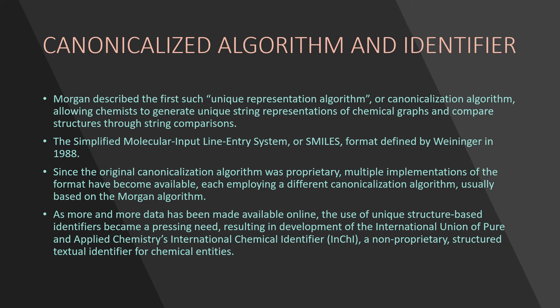There are many databases that exist online and different databases use different algorithms, so it has been hard to normalize all of them. There are too many molecular structures, which made it difficult for scientists to search for a specific molecule structure. This problem was solved by a canonicalized algorithm and identifier. The first such algorithm was described by Morgan, who described the first unique representation or canonicalization algorithm, allowing chemists to generate a unique string representation of a chemical graph and compare structures through string comparisons.